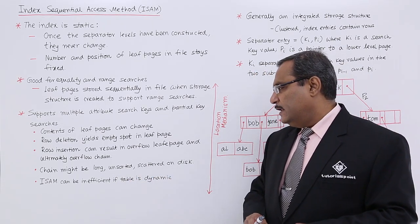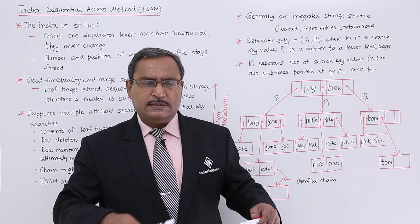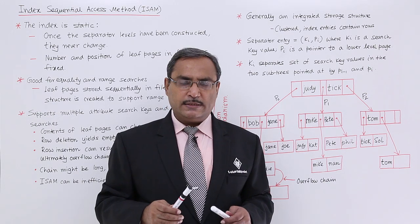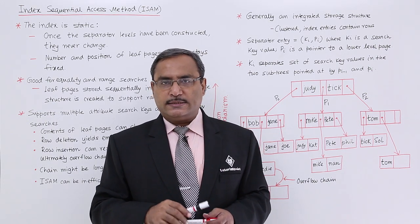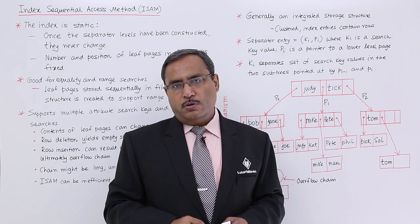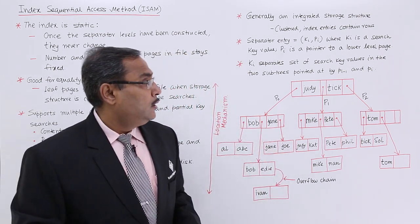Chain might be long unsorted scattered on disk. ISAM can be inefficient if the table is dynamic. That means, if there are very frequent insertion deletion updation operations taking place, in those applications this ISAM data structure is not suitable because it will go on creating more and more overflow chains and so on.